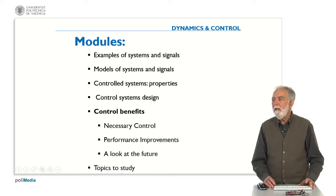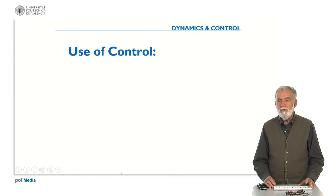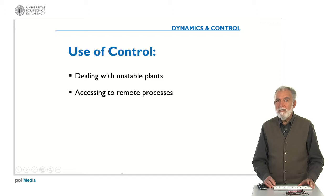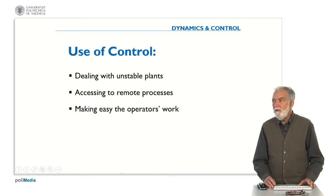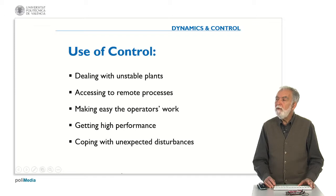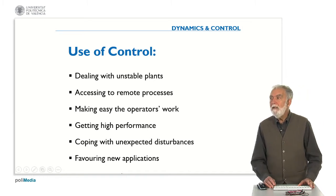Later on we will see the other benefits of the control. When are we going to use control? We need to use control when dealing with unstable plants, because stability is a basic requirement for a system. We need control when trying to access remote processes because we cannot manipulate locally. Another option is to make easy the work of the operators or to get better performance, and if in the process there are disturbances, we use control to cope with unexpected disturbances. Control will also enable new applications.